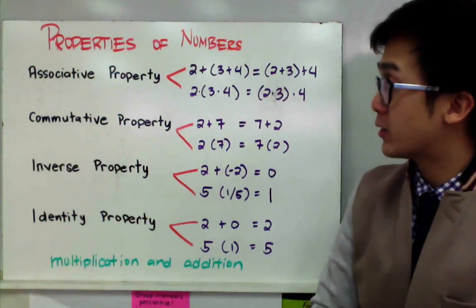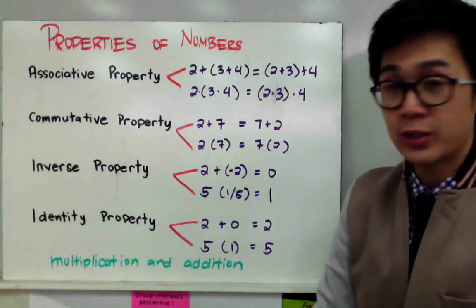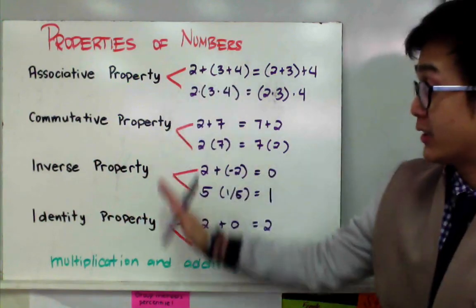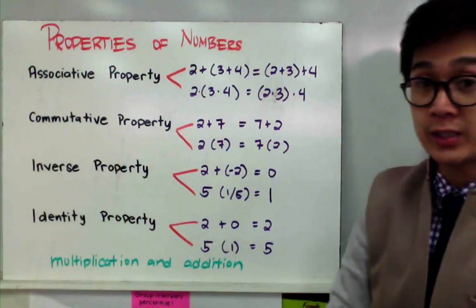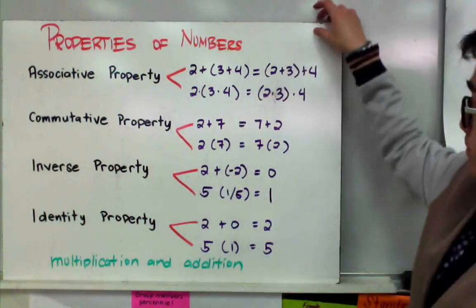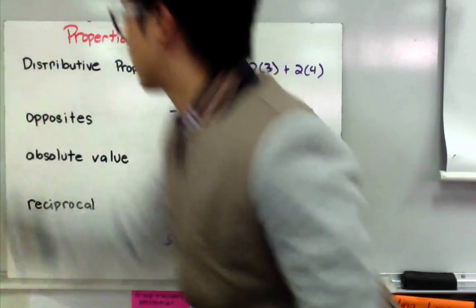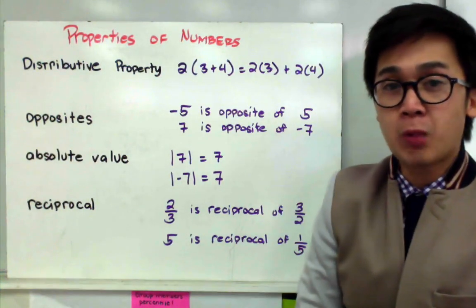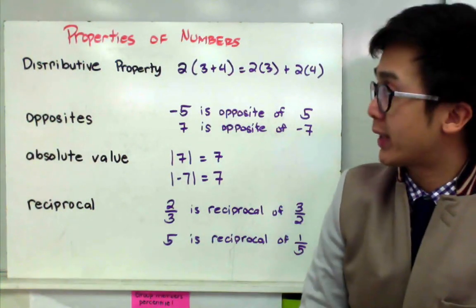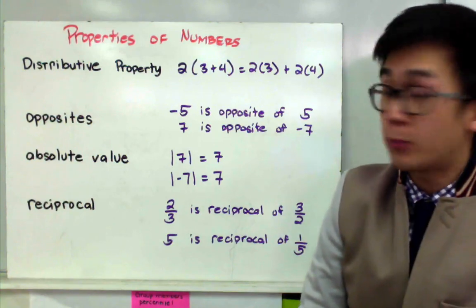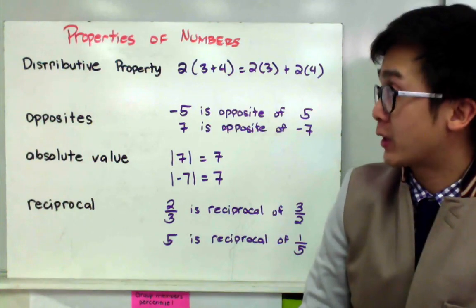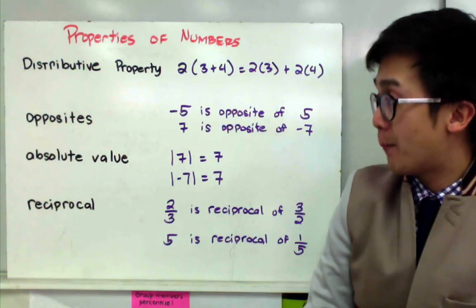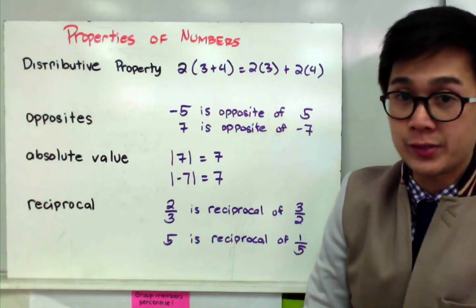So that's how the associative, commutative, inverse, and identity properties work in certain equations. Now there are several other properties we can see in some operations or equations: the distributive property, opposites, absolute value, and reciprocal.